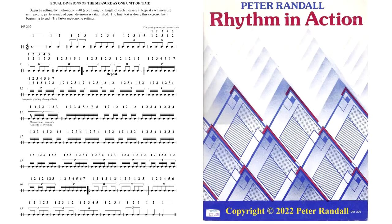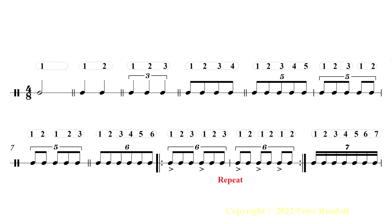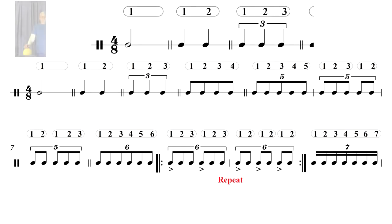Equal Divisions of the Measure as One Unit of Time, Page 62 from Rhythm in Action. Here the metronome equals 40, which specifies the length of each measure. It is assumed you have practiced each measure until precise performance of equal divisions is established.